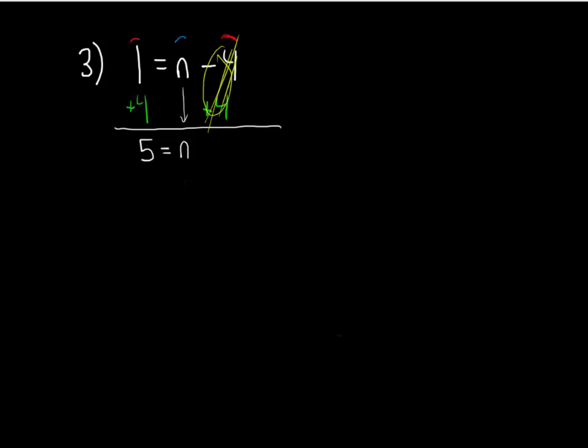You can always go back and check your answer. 1 equals n minus 4, and then substitute in the value of n that we just found when we solved. 1 equals 5 minus 4, and that's true. 5 minus 4 equals 1.